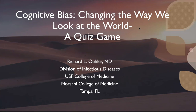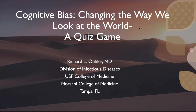Cognitive bias is a feature of the way humans process and act on information. An understanding of this type of bias is critical to making sure that we have the most objective basis to obtain information and to act in the best interest of our patients. Today, we're going to focus on 10 important types of cognitive bias and provide examples in the form of a quiz.